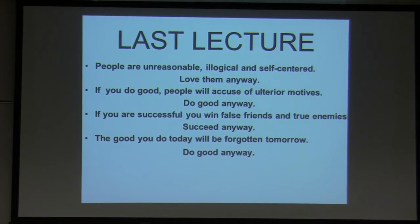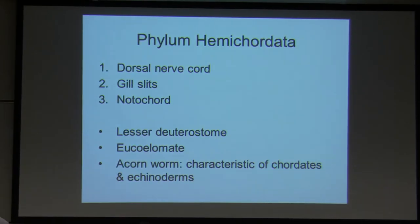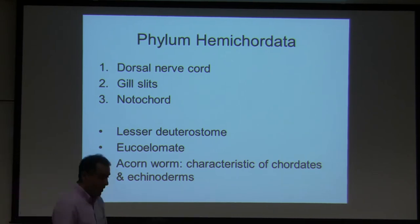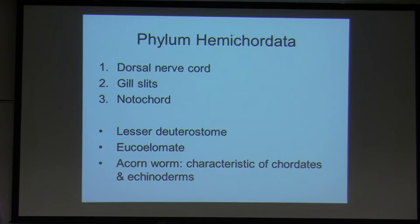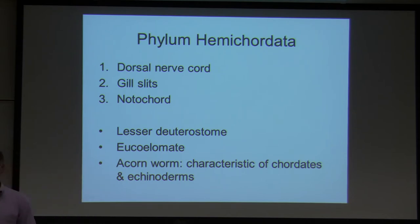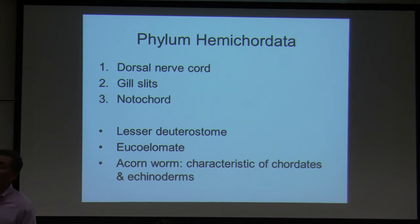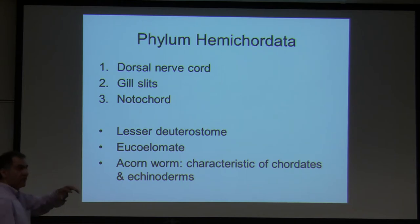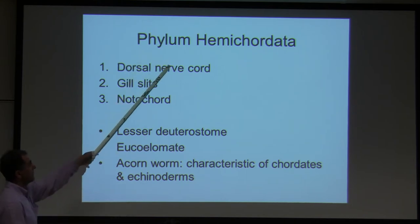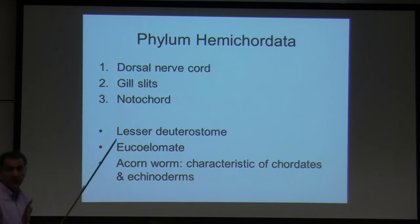Let's go ahead and talk about phylum Hemichordata. 'Hemi' means almost. These organisms have three out of five characteristics of chordates, so they are called Hemichordata. They have a dorsal nerve cord and gill slits. The big five major characteristics of chordate animals — these guys have three of them out of five.